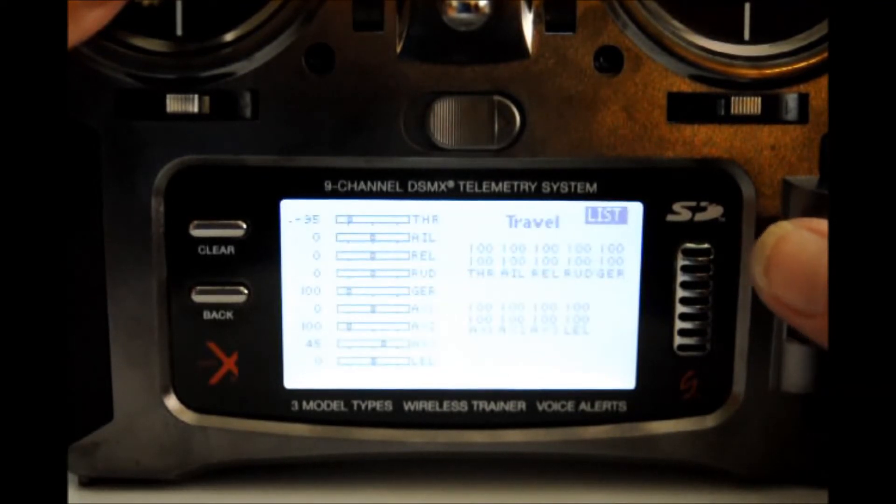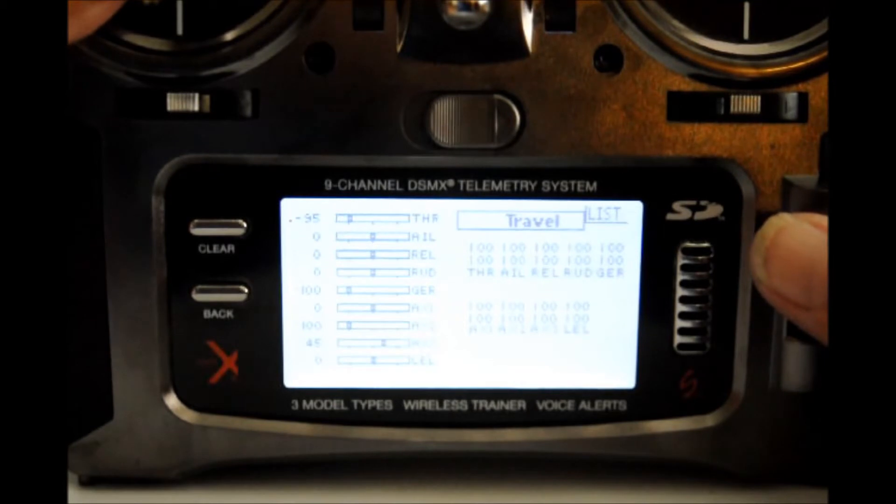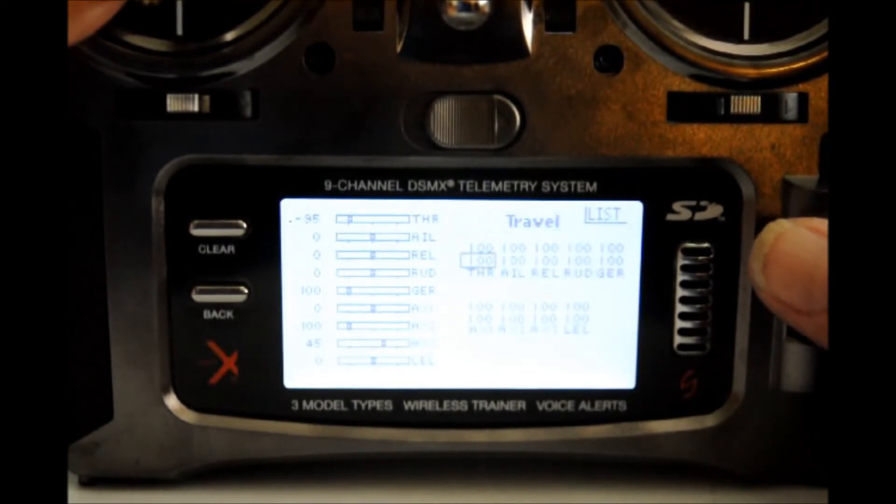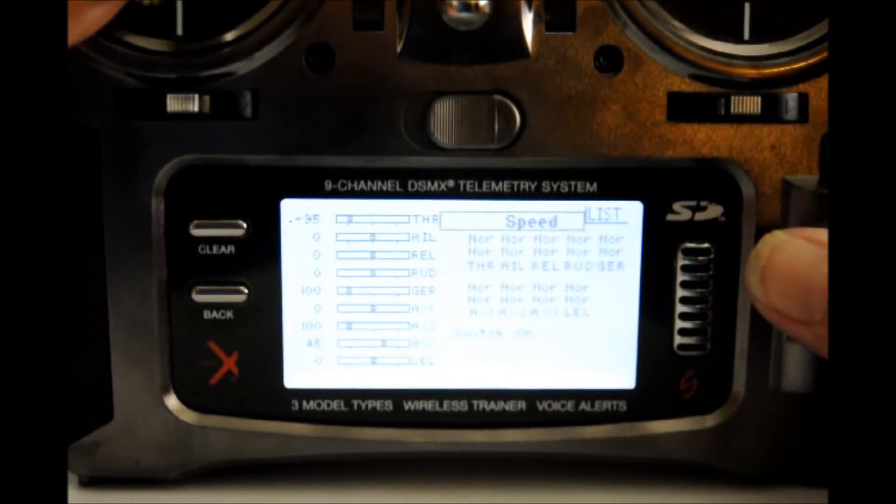Scroll with the command function. In this case, it's starting at travel. Depress the scroll switch once, and now go to speed, right there. Depress the scroll switch once.